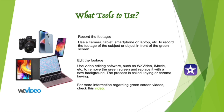You can use a tablet, smartphone, or laptop to record the footage of the subject or object in front of the green screen. You can also use apps such as Photobooth, QuickTime Player, Zoom, Screencastify, etc. to record the footage. For editing apps, you can use video editing software such as WeVideo, iMovie, etc. to remove the green screen and replace it with a new background. This process is called keying or chroma keying.